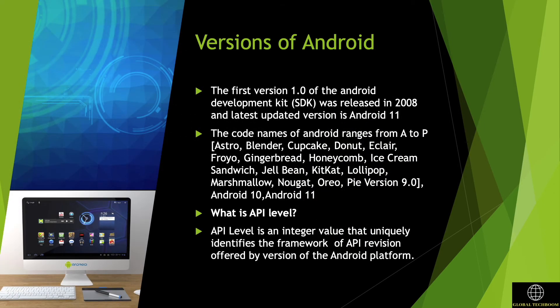In the Android operating system we can see a significant evolution of Android versions from 2008 to 2020. Android 1 is the first Android operating system ever. As of now, Android 11 is the latest major version of the Android operating system. It was announced by Google in February 2020.